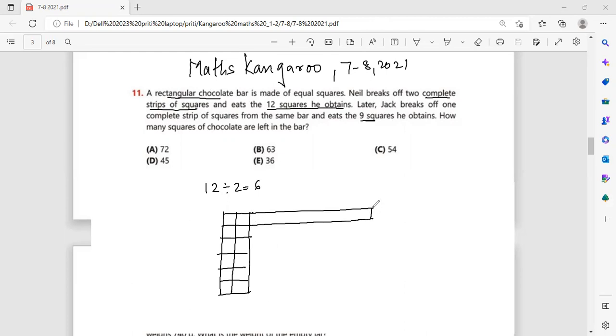So he ate nine squares. So one, two, three, four, five, six, seven, eight and nine. So these are nine squares and these were the two squares. So he ate these one strip and the nine squares of chocolates.